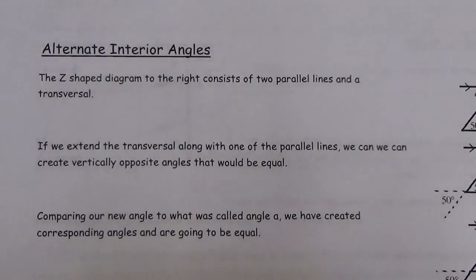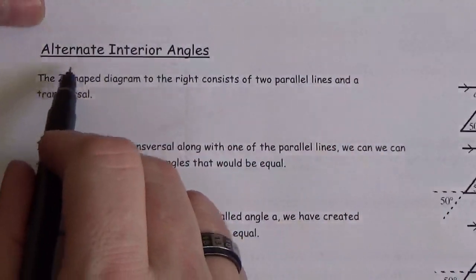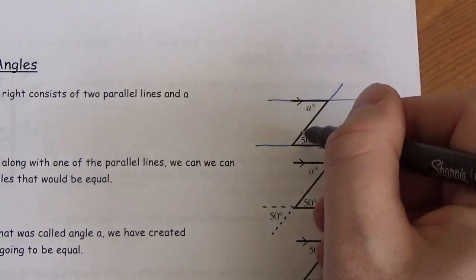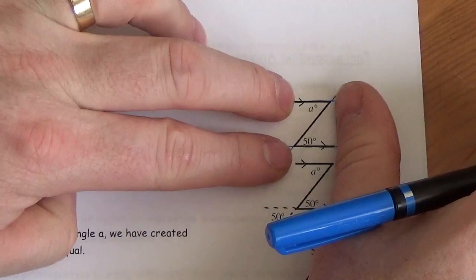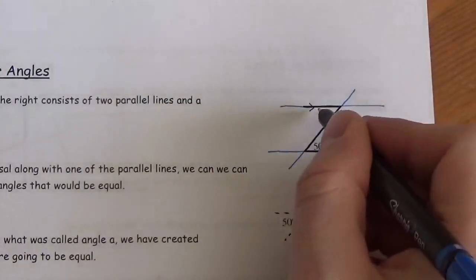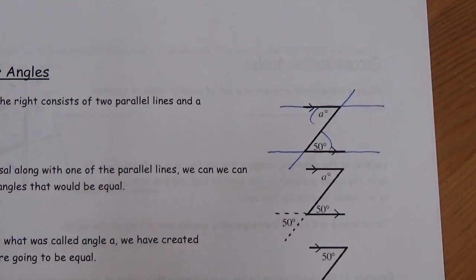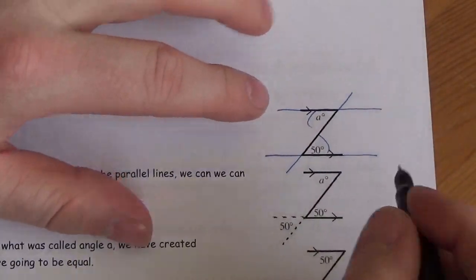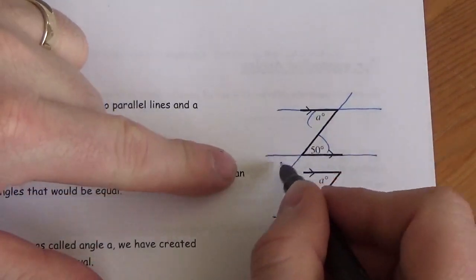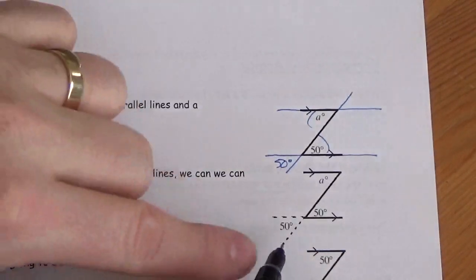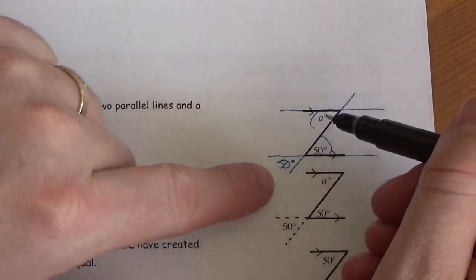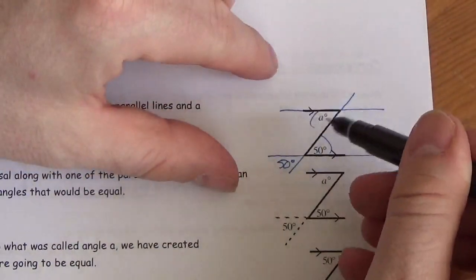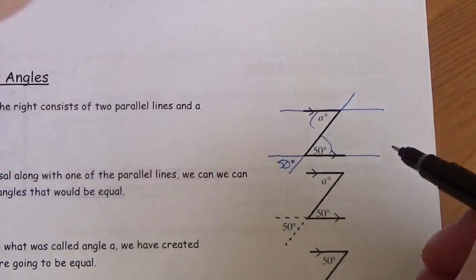Another set of angles we can find with parallel lines and a transversal are alternate interior angles — this is the Z shape in the diagram. If we extend our lines to show the parallel lines and transversal, cutting out the extras, we've got this Z shape. These two angles on the inside are going to be equal to each other. By extending the lines, we create vertically opposite angles — this angle is 50°, and by corresponding angles, the alternate interior angles must also match.